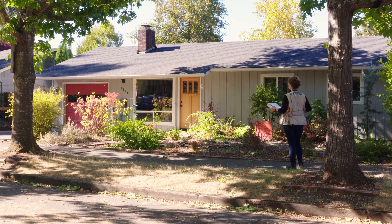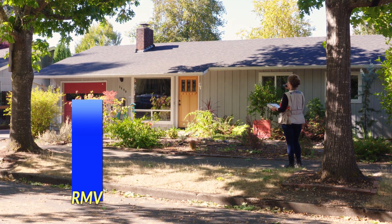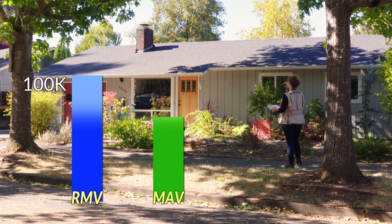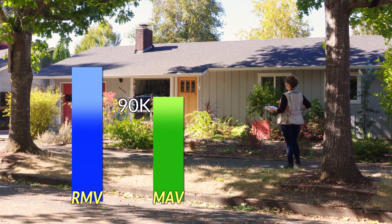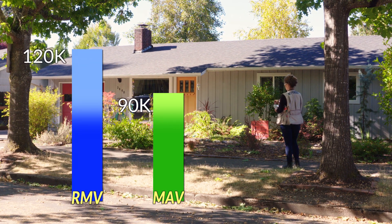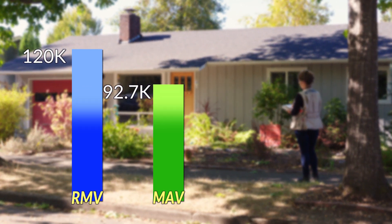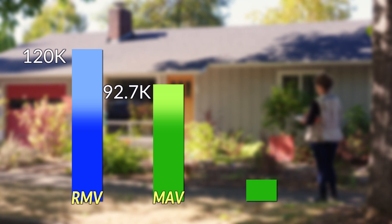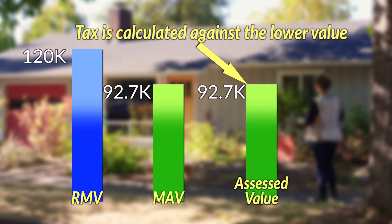Let's go back to our sample house. Let's say that last year our sample home's real market value was $100,000 and its maximum assessed value, or MAV, was $90,000. If the market is favorable and the home's real market value increases to $120,000, the maximum assessed value can only increase 3% this year, so the MAV can only go to $92,700. That's below the real market value, so the assessed value becomes $92,700.